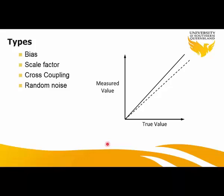The next error is the scale factor, which is similar to a scale factor in EDM calibration. Even after removing bias, there is still a difference between the slope of the true value and the measured value. This is because the slope of the dashed line is somewhat less than 1. In the absence of bias but with a scale factor present, the error associated with the measurement is twice as large if the measurement is twice as large as the original — it is essentially changing the scale.